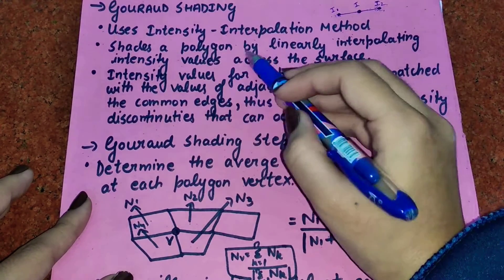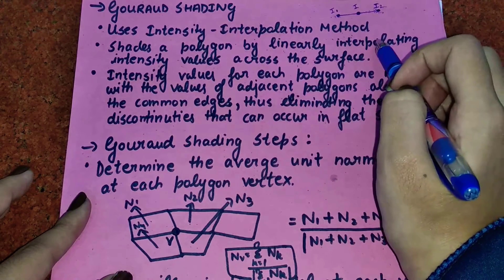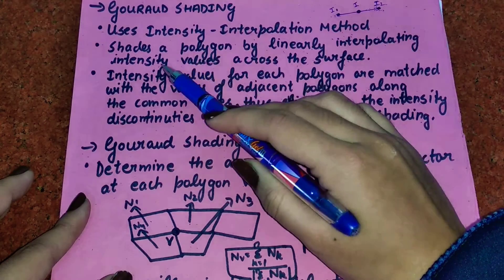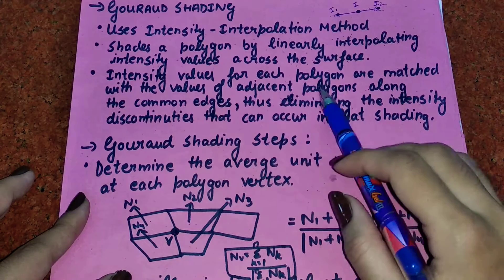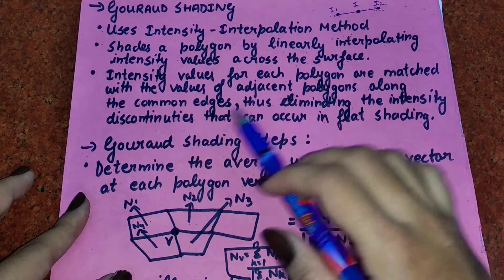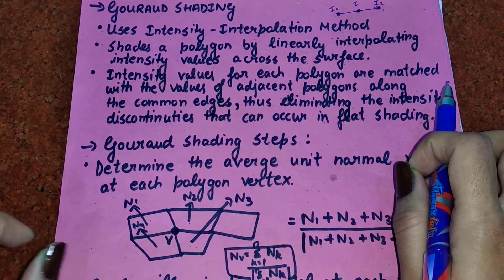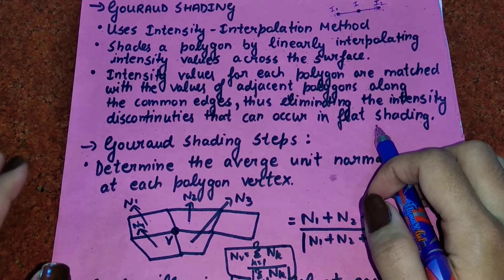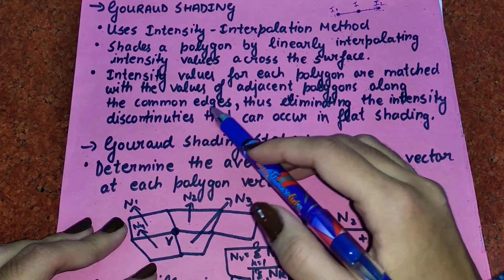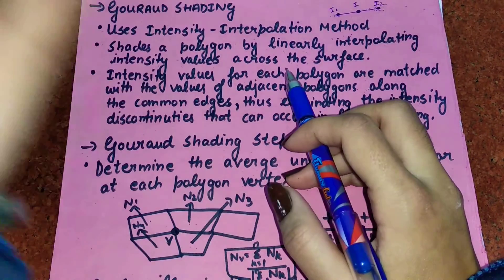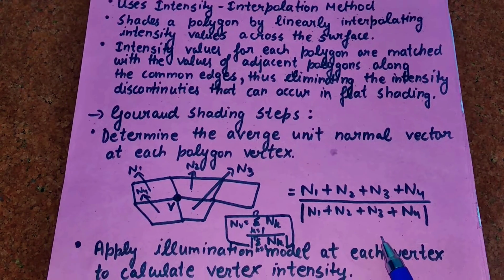Gouraud shading shades the polygon by linearly interpolating intensity values across the surface. Intensity values for each polygon are matched with the values of adjacent polygons along the common edges, thus eliminating the intensity discontinuity that occurs in flat shading. In flat shading, also known as constant intensity shading, the disadvantage was discontinuity, which is overcome by matching intensity values at the common edges.